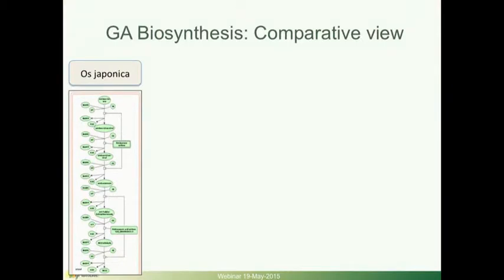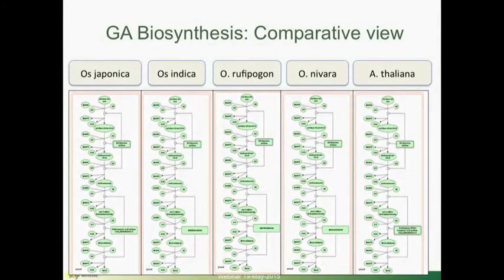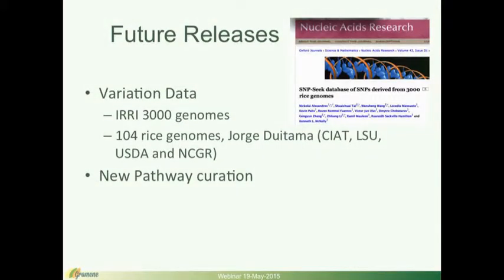In one example, there's a view looking at GA biosynthesis that you can compare across different rice species and Arabidopsis. Within pathway views, you can get details on reference information, different compartments, how to download the data, and different molecules — in formats including comma-separated, XML, or Excel. In future releases for rice, we'll be hosting the 3,000 genomes resequenced in collaboration with IRRI and BGI, with SNP variation called from that. We also have 104 rice genomes developed in collaboration with USDA, LSU, and NCGR.